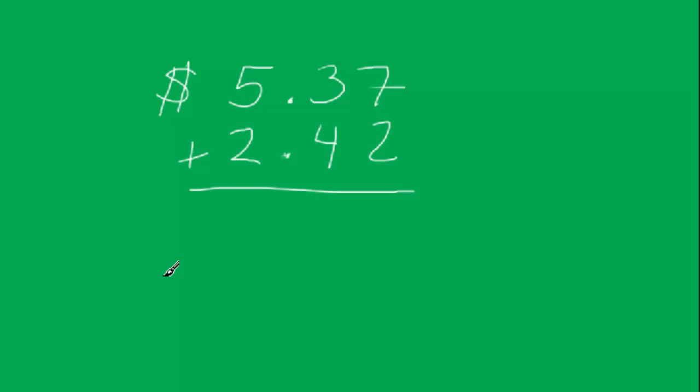If you want to add decimals, for instance, if you had $5.37 and then you received $2.42 more, how do you add that together?